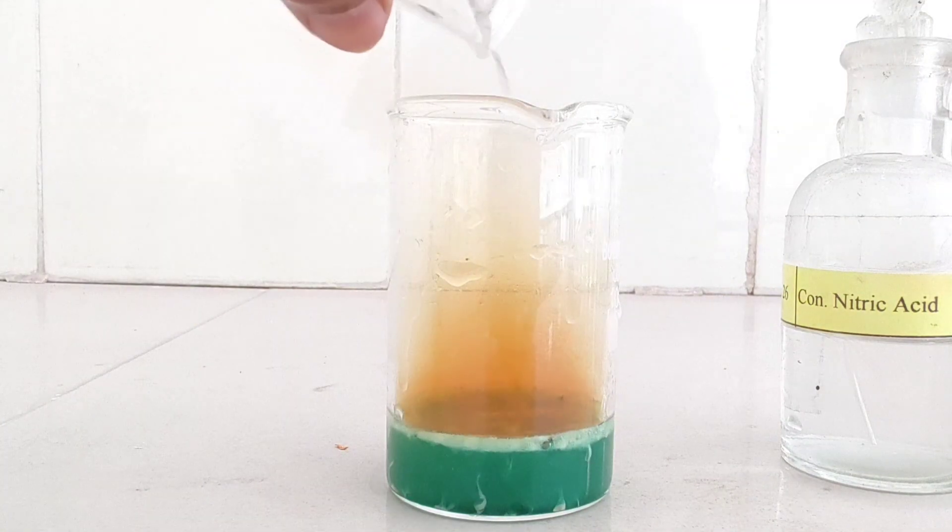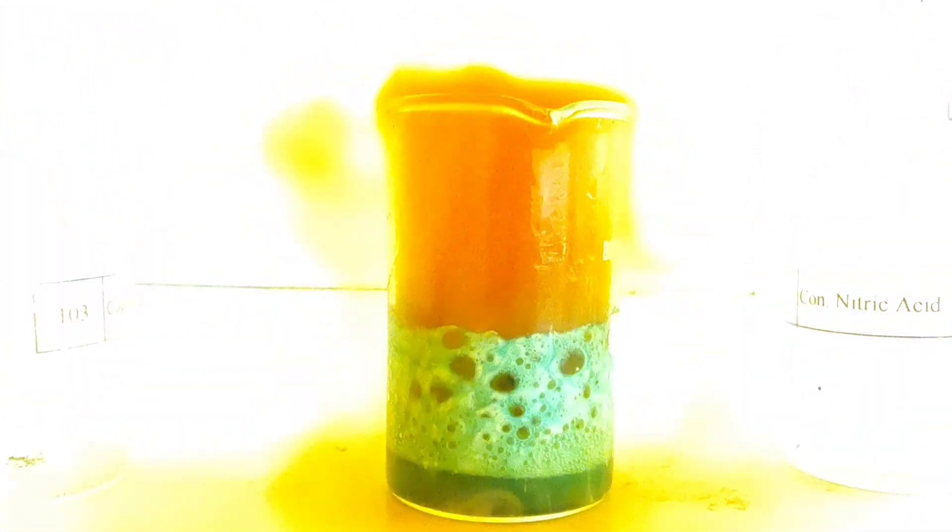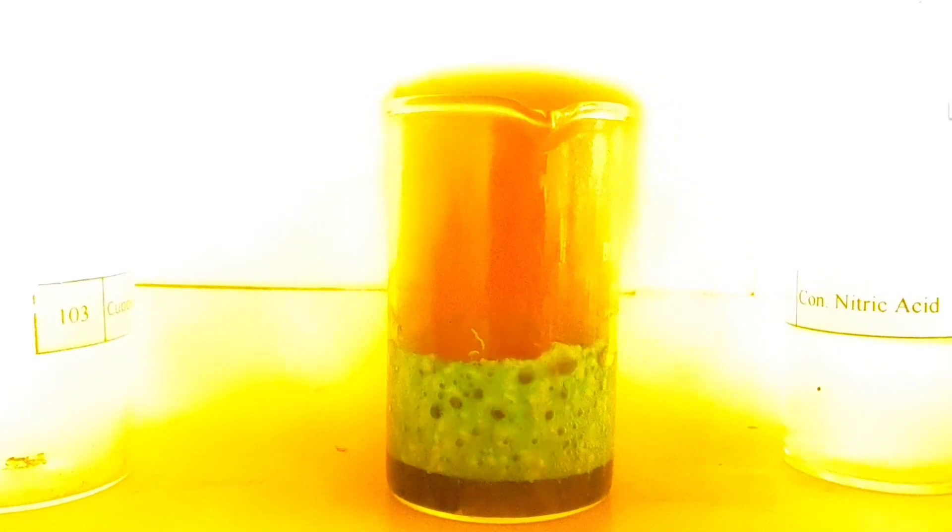When the copper is first oxidized, the solution is very concentrated, and the Cu2+ product is initially coordinated to nitrate ions from the nitric acid, giving the solution first a green, and then a greenish-brownish color.